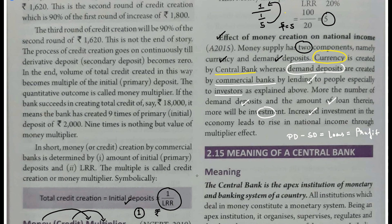Banks ke paas agar NPA - non-performing assets - ki dikkat ho, toh sab kuch theek chal raha hota hai lekin jis person ne loan liya wo principal amount tak wapas nahi karta. Yeh hum aage padhenge - NPA ka poora structure, kya hota hai jab koi default kar jaata hai, bank ko paisa nahi de paata, property seal hoti hai ya jo legal repercussions hote hain - sab jaanenge. Dispute settlement mechanism, kaun si authority hoti hai - yeh sab hum cover karenge.